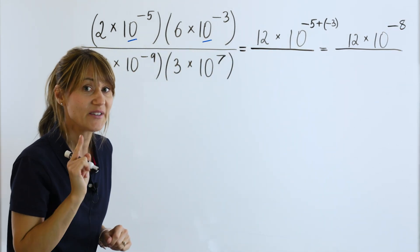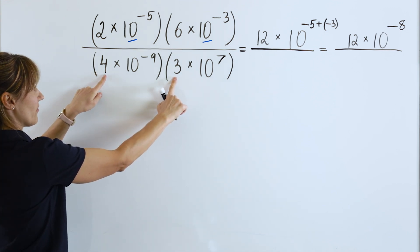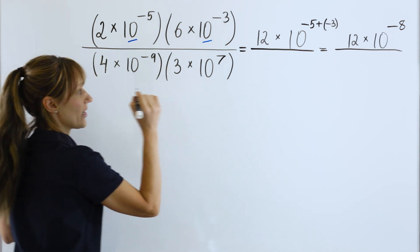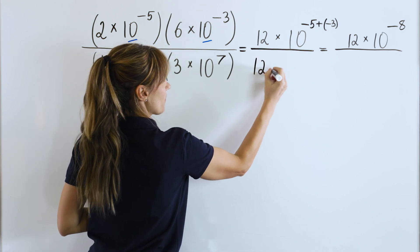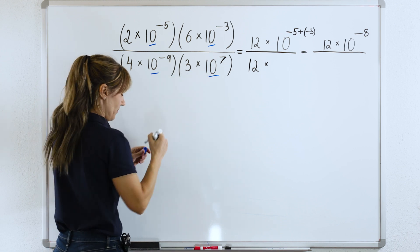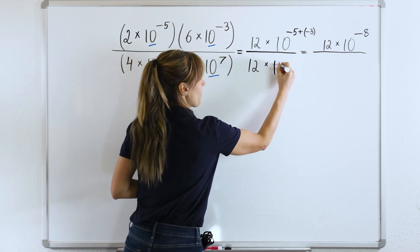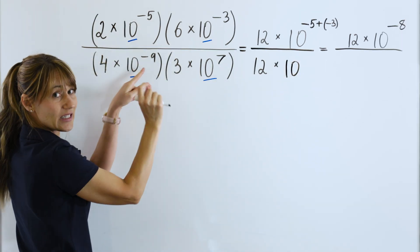We will do the same thing in the denominator. First, we will multiply the numbers. 4 times 3 is 12. Times. When you multiply with the same base, we have the base 10, you keep the same base 10 and add the exponents.